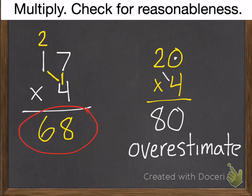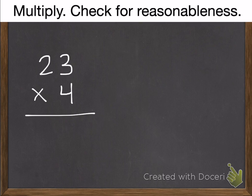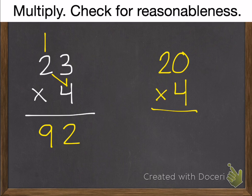Now it's time for you to do two practice problems. Here's your first one, 23 times 4. Go ahead and multiply that, and then check it. I would use estimation. And then unpause and we'll see how you did. Okay. 3 times 4 is 12. 4 times 2 is 8, plus our extra 1 is 9. And let's check it. 20 times 4 is 80. That's an underestimate. So 92 seems reasonable.